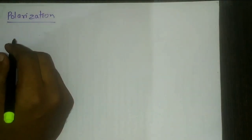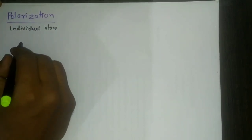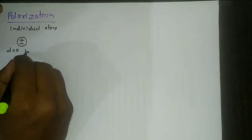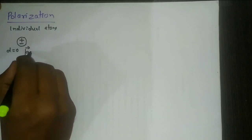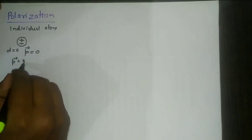Dear students, today we start with a new topic: polarization. So far we considered the effect of an external electric field on an individual atom or molecule. Consider a single atom of a non-polar dielectric material whose center of gravity of positive and negative charges coincide, therefore D will be zero. This non-polar atom or molecule doesn't have any dipole moment because P is equal to Q into D.